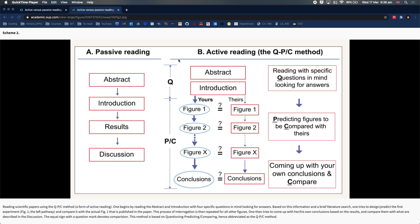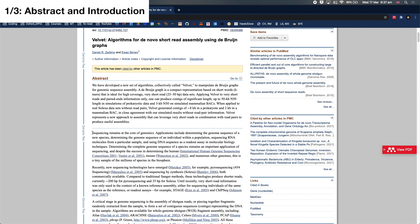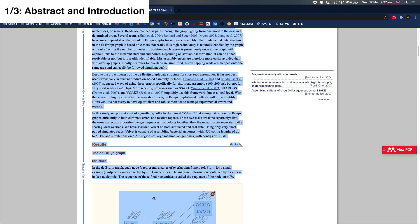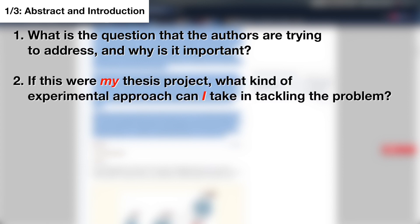Once you decide that you want to read a paper in full, this is what you do. First, read the abstract and introduction while you keep the following four questions in mind. 1. What is the question that the authors are trying to address and why is it important? 2. If this were my thesis project, what kind of experimental approach can I take in tackling the problem?